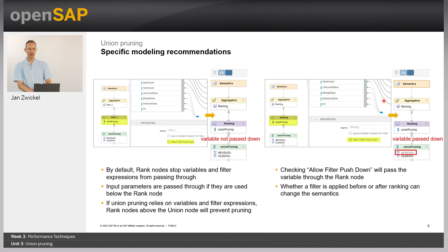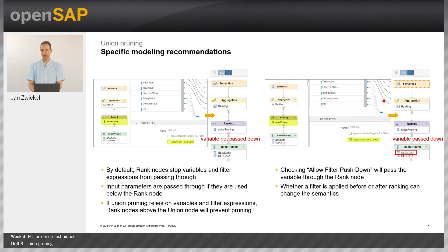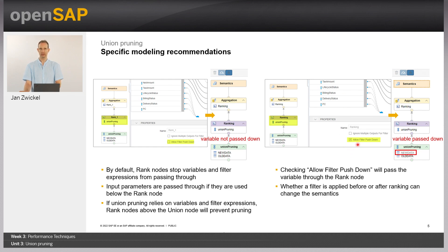How can you still make union pruning occur? One option is to use input parameters for the filtering. Input parameters are evaluated at the stage where they are defined or used in a model, so you can ensure a filter arrives at the union node via the input parameter. Another option, for the rank node specifically, is to select 'Allow Filter Pushdown'. If you select that explicitly, it means you understand the semantics and want filters executed before ranking — and then union pruning can take place if the union is defined below the ranking node.